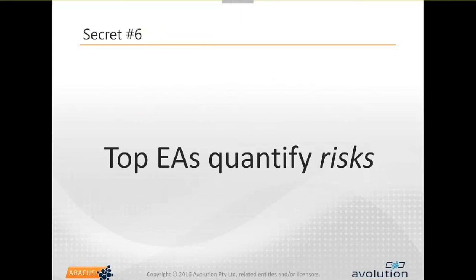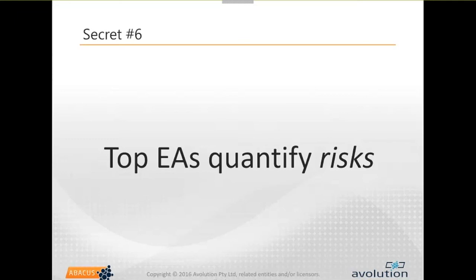Secret number six: top enterprise architects quantify risks. This is where we really get into the whole metrics world. All the things before - you can do a heat map and show the areas that are risky or going to change, using low, medium, high - it doesn't have to be five decimal places. Don't confuse precision with accuracy. When you start to want to have deeper and more trusted conversations, you need to start to quantify these things. When we look at how quantification is done, there are really about four different types of metrics you can look at - these are different when you get into the algorithms and different approaches to come up with numbers and make quantitative recommendations.